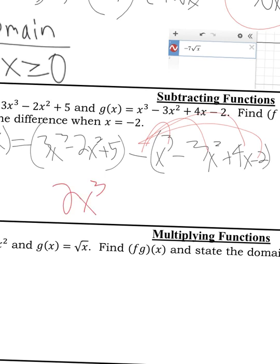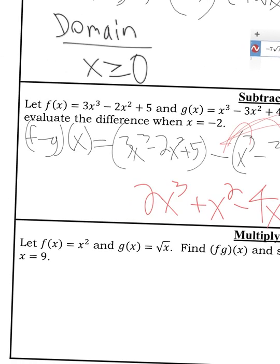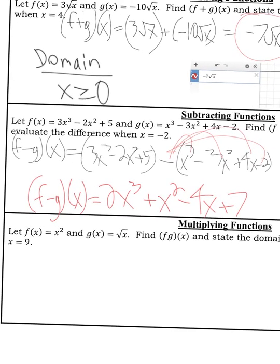That is 2x to the third. What is negative 2x squared minus a negative 3x squared? That turns into a plus. So negative 2 plus 3 is 1. So plus 1x squared. Then you have no x term. So you have 0 minus 4x. That's negative 4x. And then you have 5 minus negative 2. That turns into 5 plus 2. That's 7. So my f minus g of x equals negative 2x to the third plus x squared minus 4x plus 7.